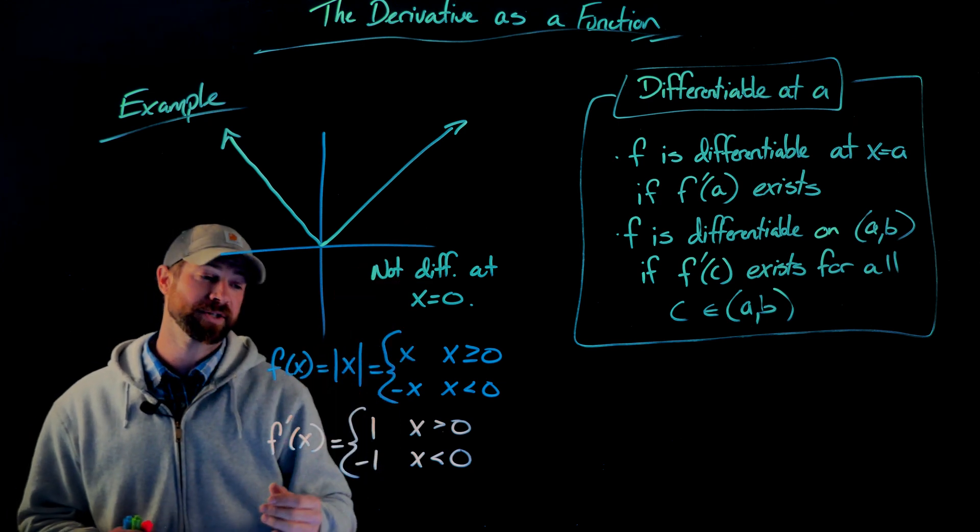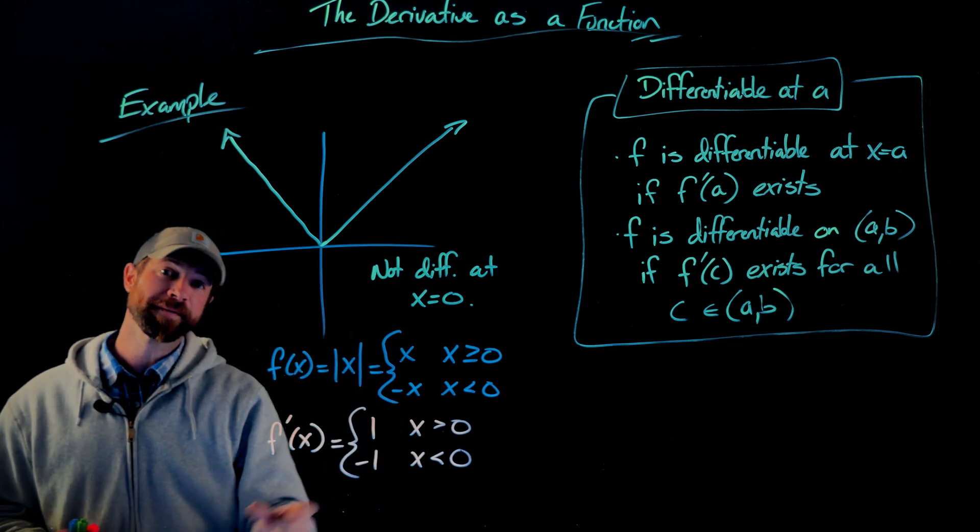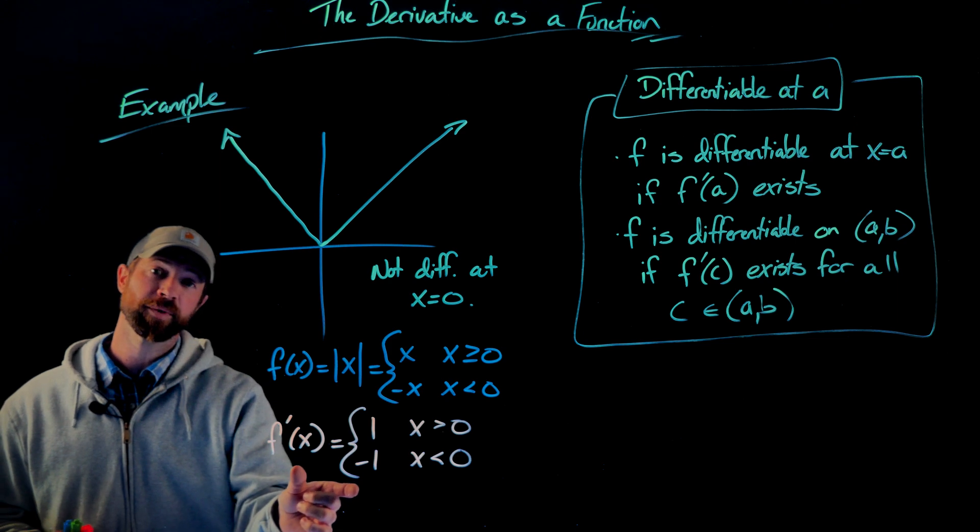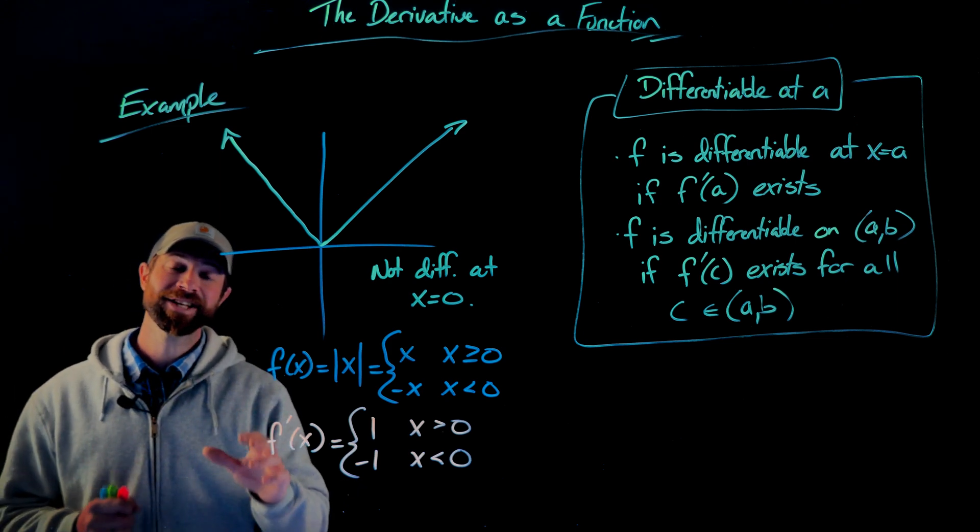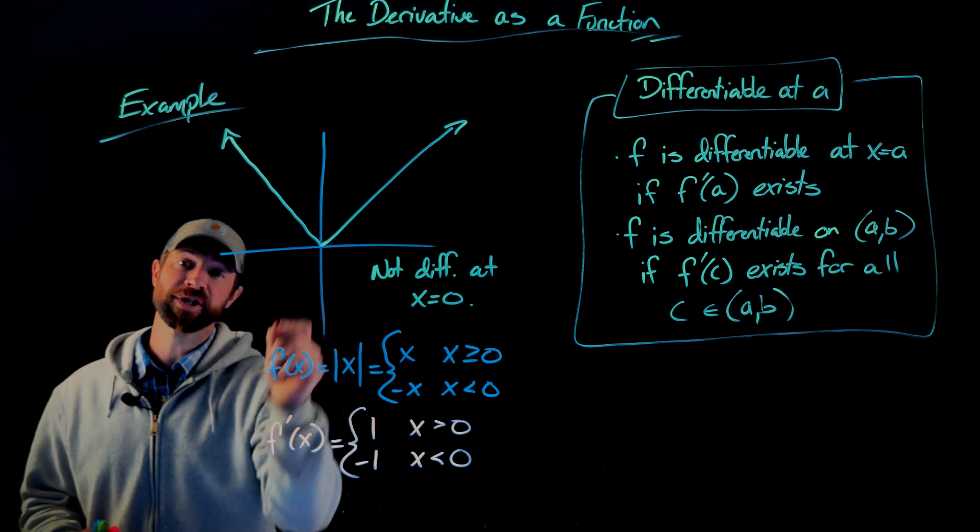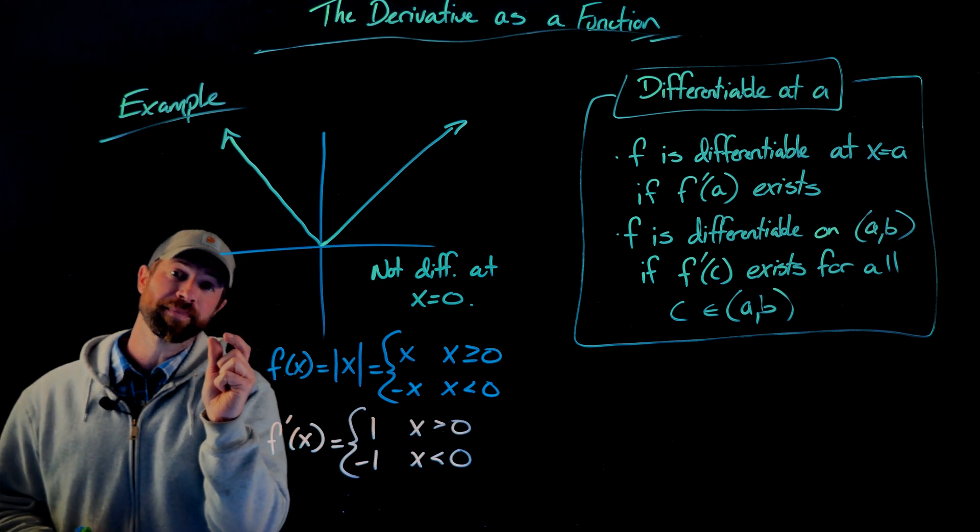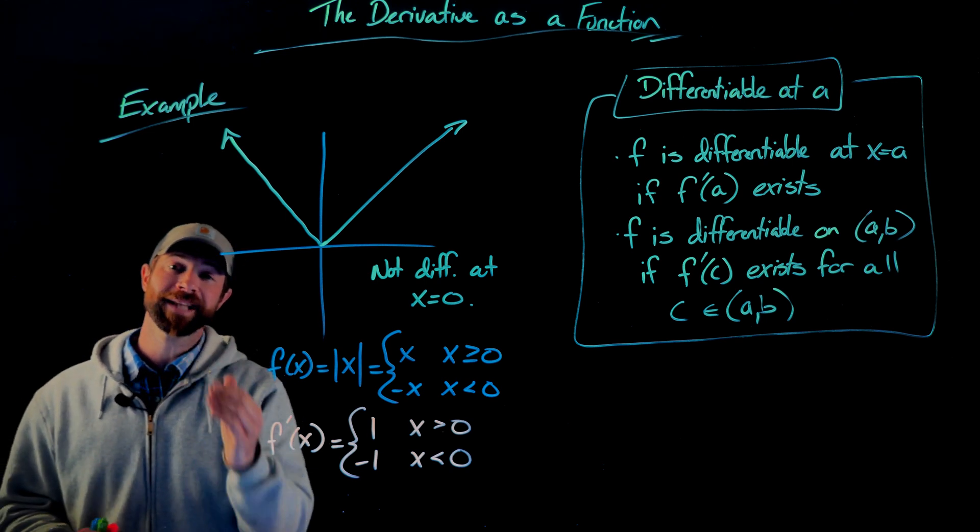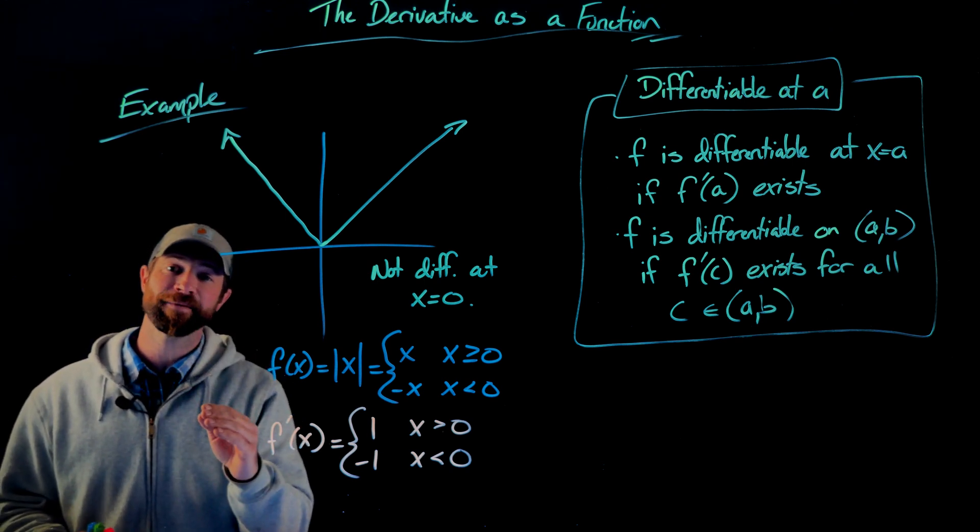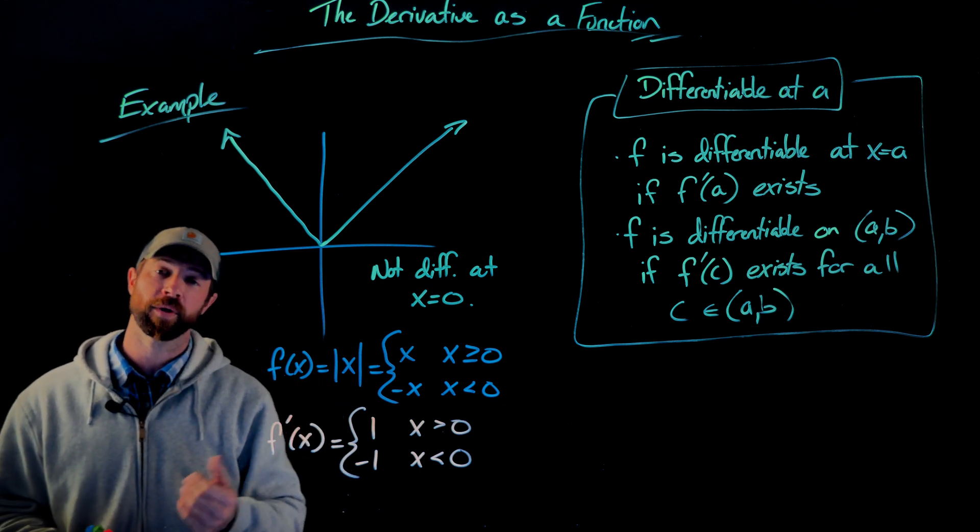And they're positive one from the right side of zero. Here is the derivative of the absolute value function right here. And the issue is, as you approach zero, the slopes are not approaching the same value. From the left, they're staying stagnant at negative one. From the right, they're staying stagnant at positive one.